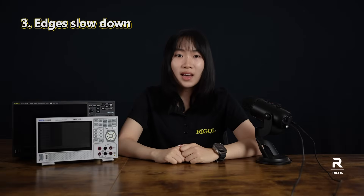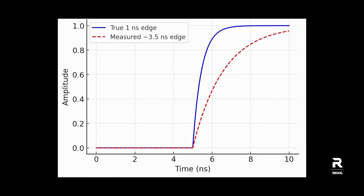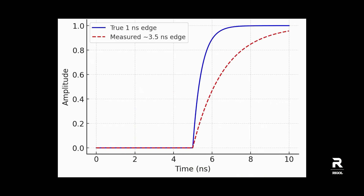And third, edges slow down. Every scope has its own rise time, and for a 100 MHz scope, that's about 3.5 nanoseconds. If you feed it a 1 nanosecond edge, the scope just can't keep up, and the signal looks slower than it really is. This illustration shows how edges slow down — the blue line is a true 1 nanosecond edge, and the red line is what a 100 MHz scope would show, stretched out to around 3.5 nanoseconds.